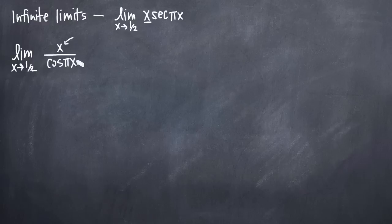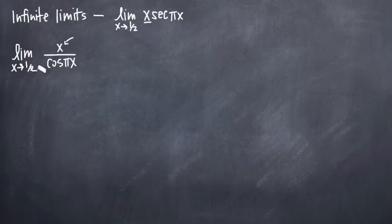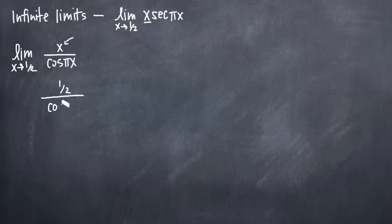Now, as with any limit problem, our next step is to see if we can use substitution to find the limit as x approaches one-half. Substitution is where we take the number we're approaching — in this case one-half — and just plug it into our function. So if we plug one-half into the function, we'll get one-half divided by cosine of pi times one-half, which is pi over two. So we'll get cosine of pi over two.